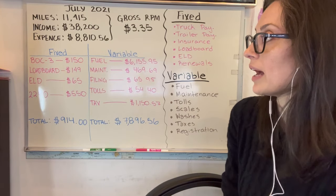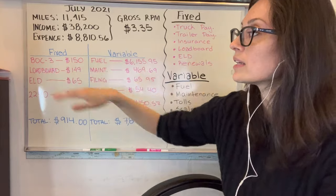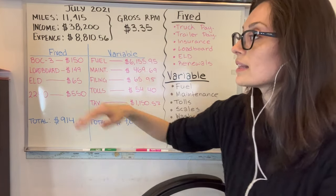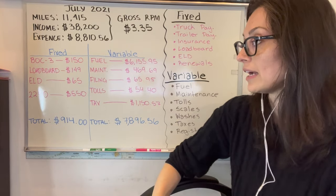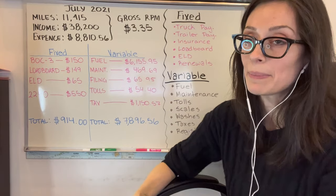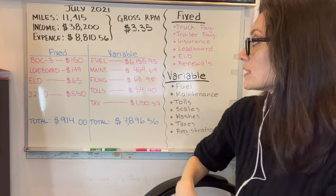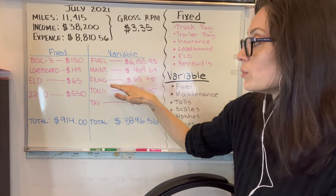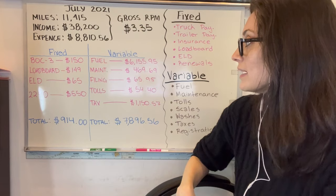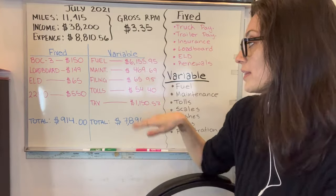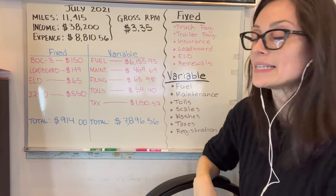The fixed expenses for the month of July were: the annual BOC-3 renewal at $150 per year, the monthly load board expense at $149 per month, the monthly ELD expense at $65 per month, and the annual 2290 at $550 per year. The total fixed cost was $914. Now onto the variable costs: fuel this month was $6,155, maintenance was $469, the filing fee for the 2290 was $65.95, tolls were $54, and taxes were $1,150. The grand total for variable expenses for the month of July was $7,896.56.